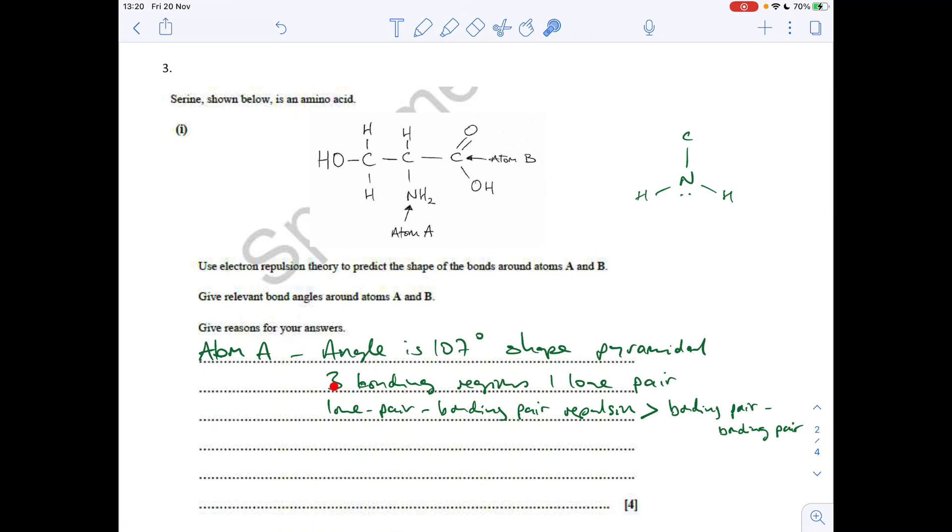So just covering all bases, angle 107 degrees, shape pyramidal. Three bonding regions, one lone pair, and then just that bit about the increased repulsion from the lone pair, bonding pair, which is greater than bonding pair to bonding pair.